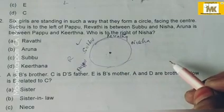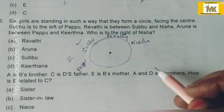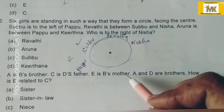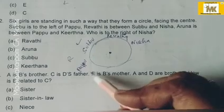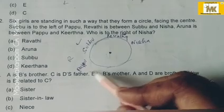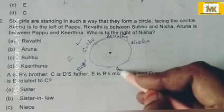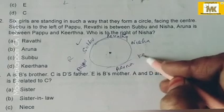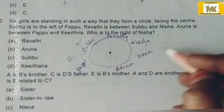Then, Aruna is between Papu and Kirtana. Papu is here. Then, Kirtana.